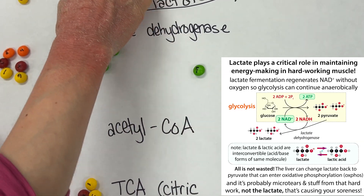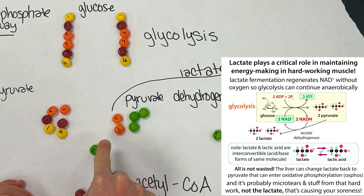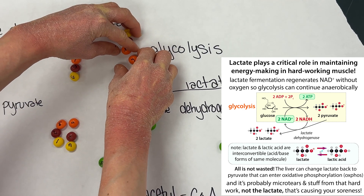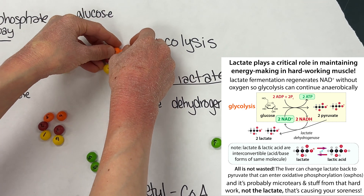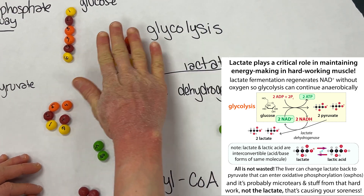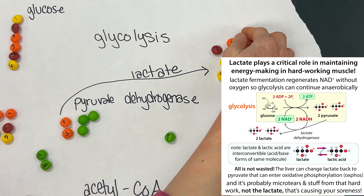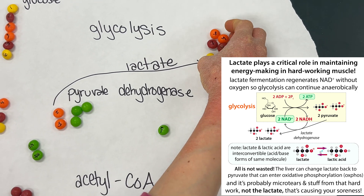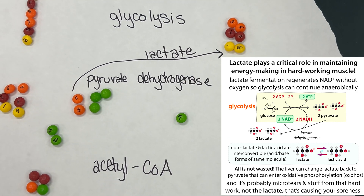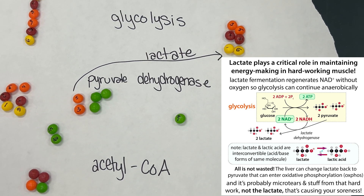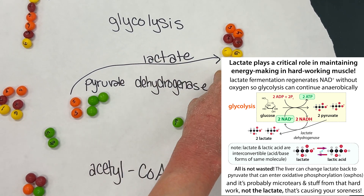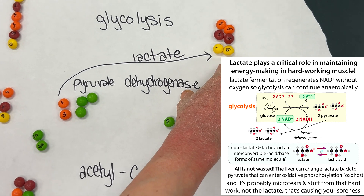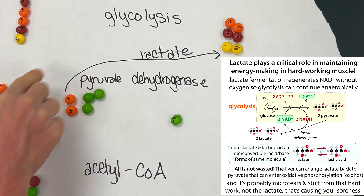If instead of going through pyruvate dehydrogenase, we were to make pyruvate and then take it to lactate, in that case we're actually not going to lose any CO2. The reason I bring this up is because it's going to come into play when we think about radiolabeling. Taking things to lactate does not make CO2, but it does allow us to regenerate NAD+, if we wanted to keep glycolysis going.